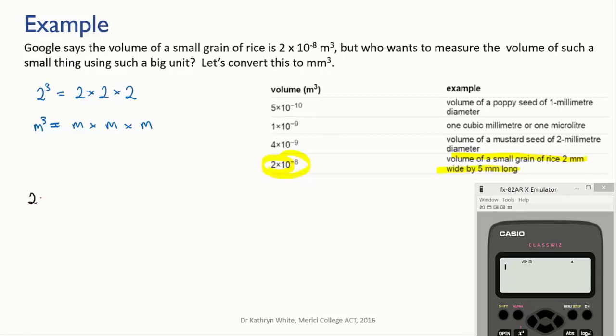So what we need to do here is to convert meters to millimeters 3 times over, one for each of those 3 meter units. So we just run through those conversions one after the other, like this.